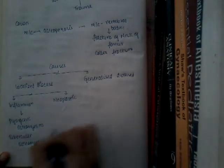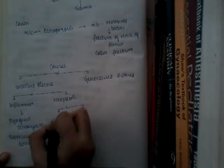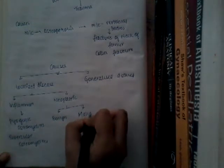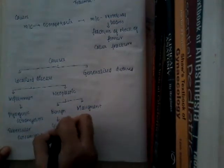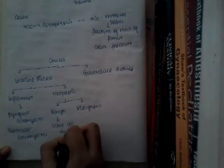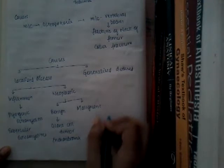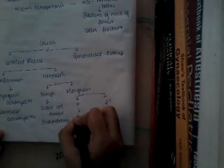If it is neoplastic, it can be of two types — benign tumors or malignant tumors. If it's benign tumors, it can be giant cell tumor, also called osteoclastoma, or it can be enchondroma. If it's malignant, it is again divided into primary or secondary malignancy. If it's primary, it can be due to osteosarcoma or Ewing's tumor.